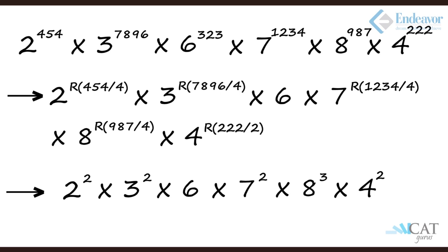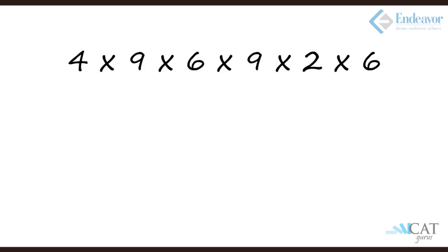So we get the last digits as 4, 9, 6, 9, 2, 6. Let's multiply: 9, 9 is 81, so 1 is there, so we can rule it out. 6 is 36, so it's 6, let's put it in one place. 4 into 2 is 8, so 6 into 8 is the final answer which is nothing but 8. So the last digit of such a huge calculation is 8.